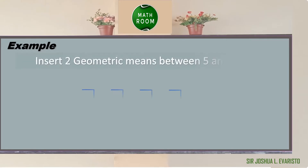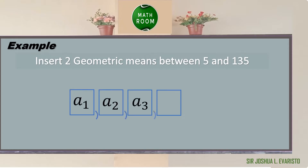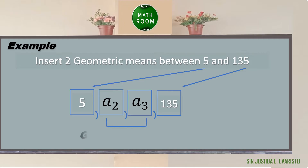Let's have an example. Insert two geometric means between 5 and 135. Since we're looking for two geometric means, we have four terms in all. We can substitute 5 for the first term (a1) and 135 for the last term (a4). Then we can solve the geometric means, which are a2 and a3.